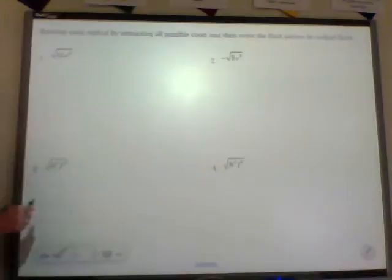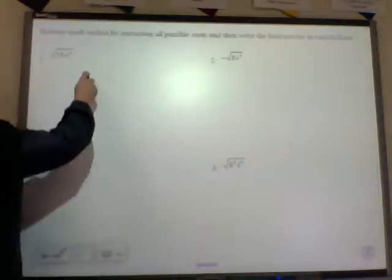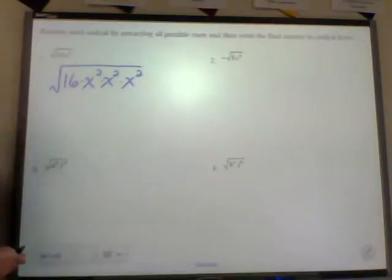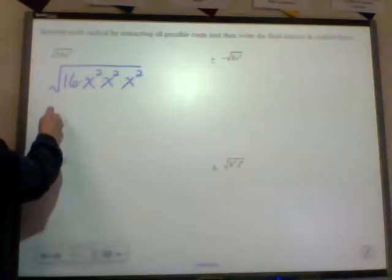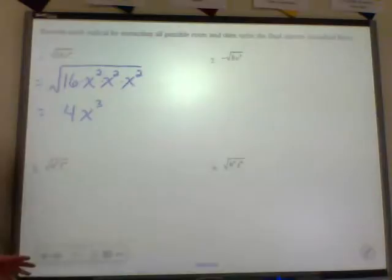Now I'm hoping you already have some solutions. When you were looking at 16x to the sixth, you're thinking: I know the square root of 16 is 4. And I know that if I have x to the sixth, for every pair of x's I can take out of there — we can think of that as 16 times x squared times x squared times x squared, and for every pair of factors x, we can pull one out. So technically, I'm assuming a lot of you wrote this as 4x cubed. And that is wrong.